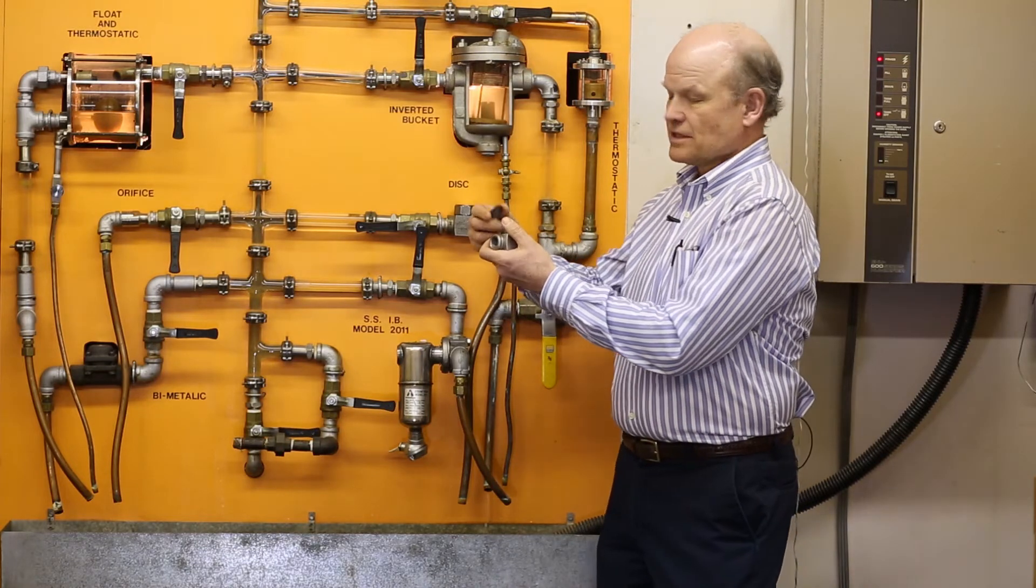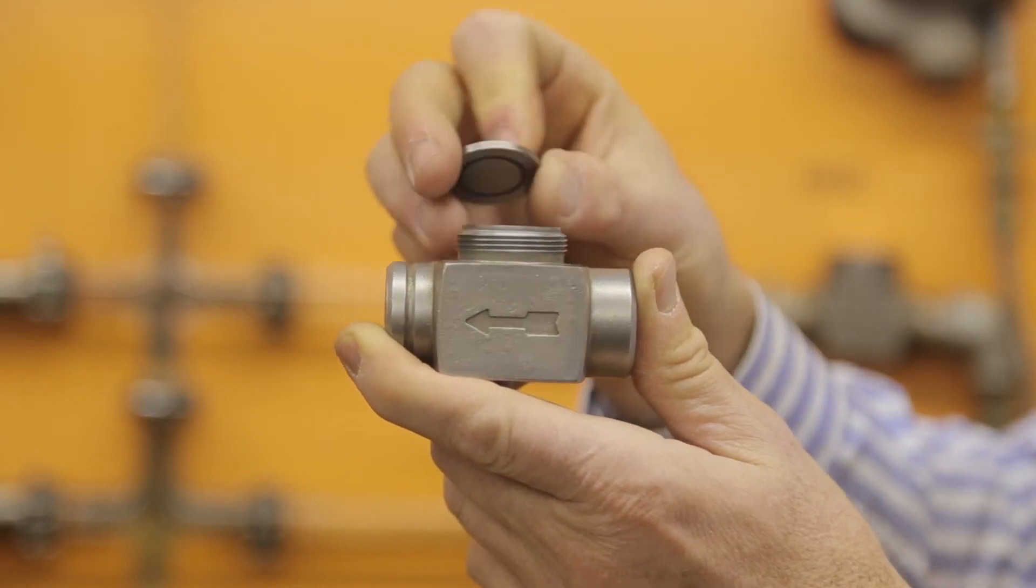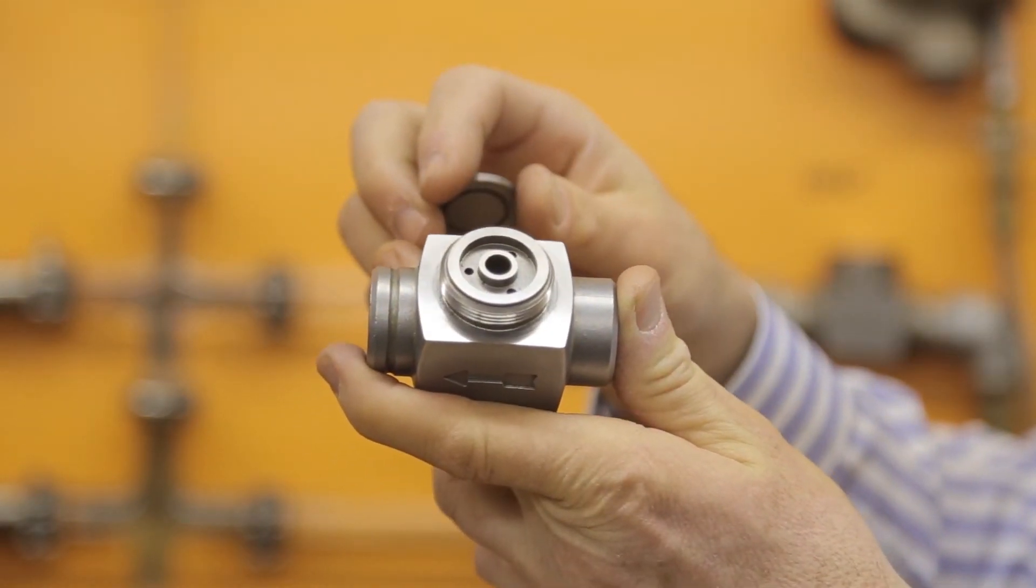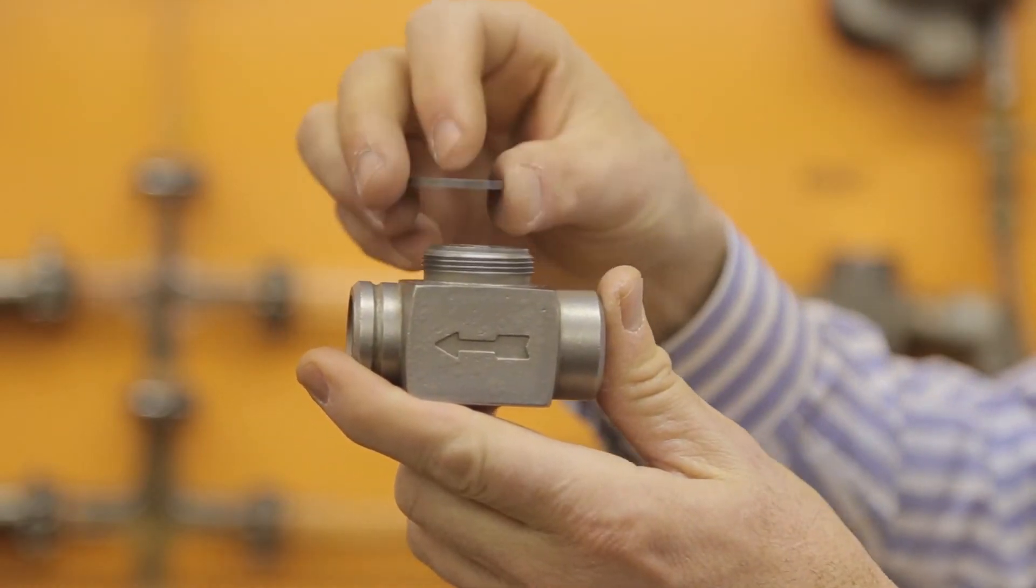Inside this trap is a flat disc, and that's why it's called a disc trap. So here's the disc. Condensate comes in through the center hole of this trap, hits the disc, turns and flows out.